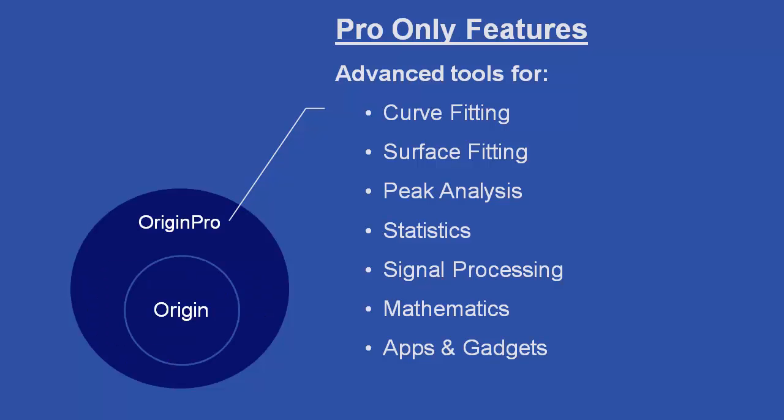Origin Pro includes all of the features available in Origin, but in addition provides advanced analysis tools for curve fitting, surface fitting, peak analysis, statistics, signal processing, and mathematics. Additionally, several apps and gadgets are available exclusively for Origin Pro.